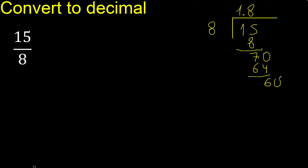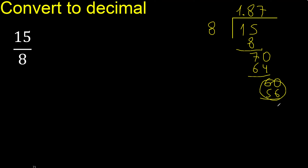Always complete with 0. Point is here. Bring down: 60. Divide by 8 — multiply by which number. 8 multiplied by 8 is greater. Multiply by 7 is 56. Subtract: remainder is 4.